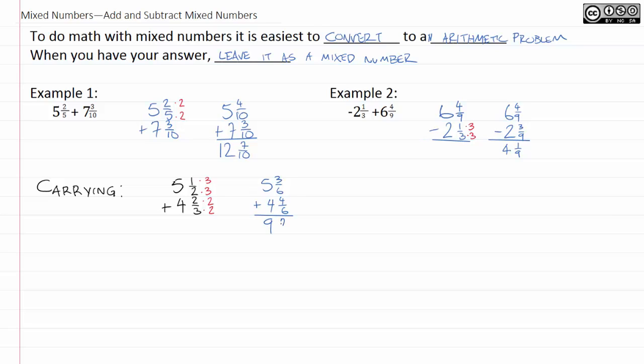We get 9 and 7 out of 6. The problem is, this isn't technically a mixed number because if you look at 7 over 6, that's bigger than 1. So, here's how we're going to adjust for that. We're going to subtract the denominator. 7 minus 6 is 1. And add to the whole part. And so, it actually turns out this is 10 and 1 sixth.